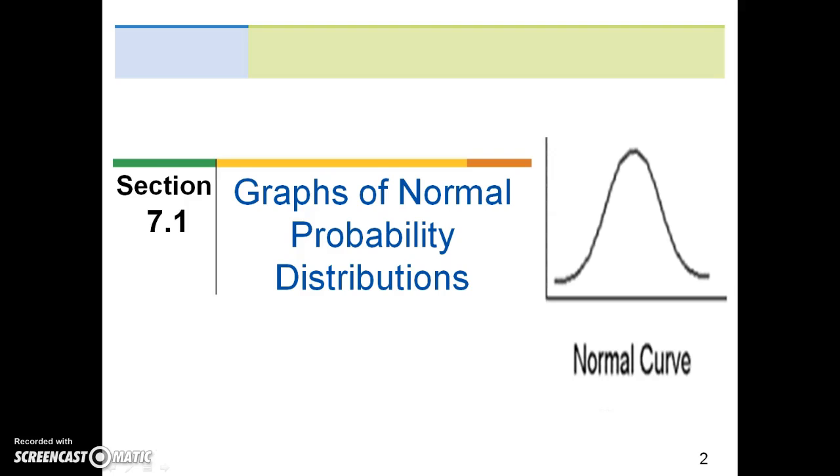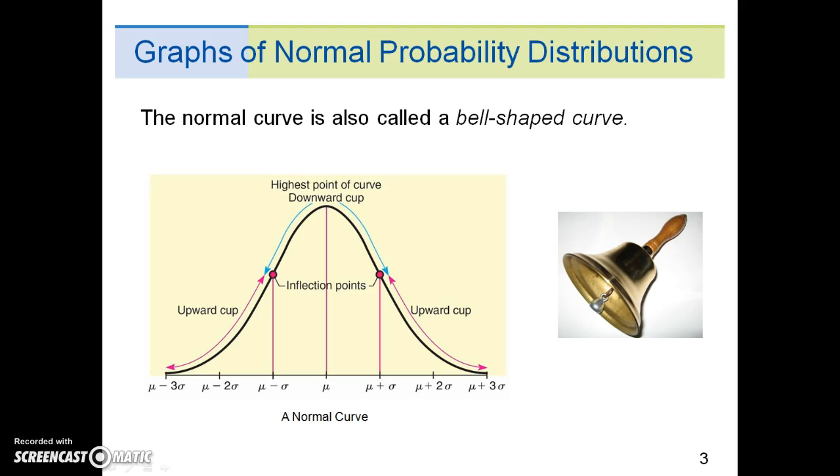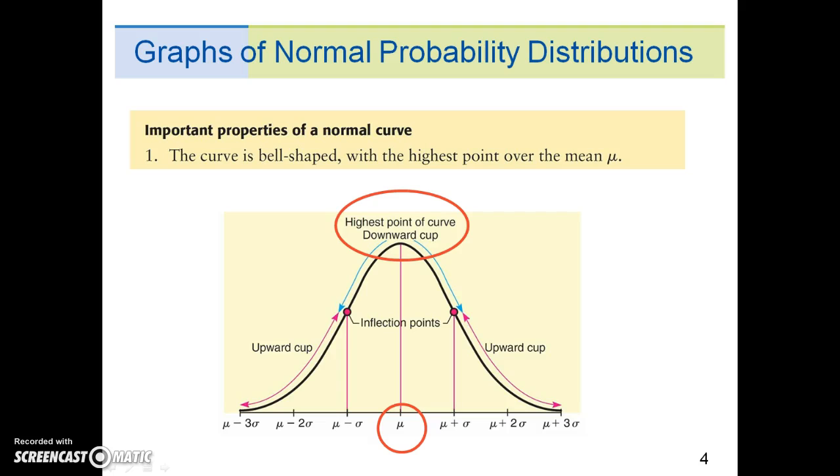Section 7.1 starts with graphs of normal probability distributions and their properties. The normal curve is also called a bell-shaped curve. There are five important properties of a normal curve. The curve is bell-shaped with the highest point over the mean, mu.